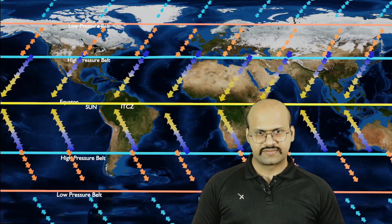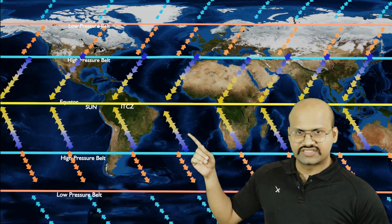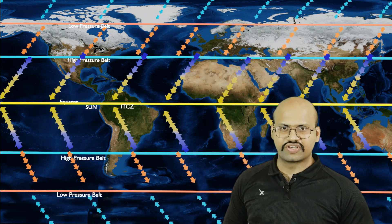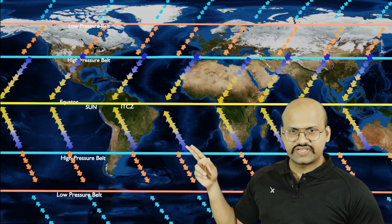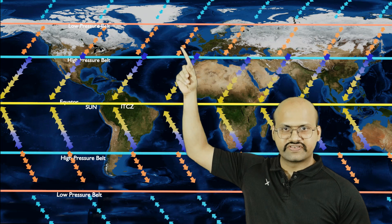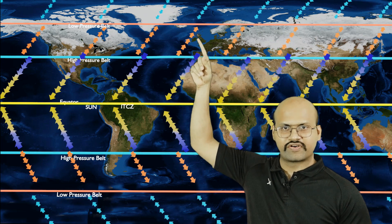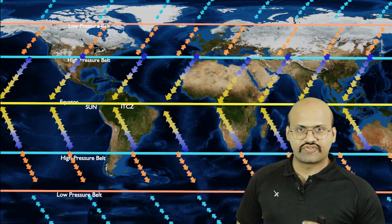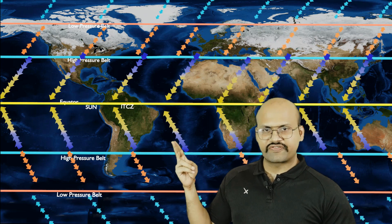Let's start with surface winds. Here we can see the flow of surface winds — this is the Hadley cell, this is the Ferrel cell, and this is the polar cell. These winds flowing from the eastern direction are called easterlies, winds flowing from the western direction are called westerlies, and the polar winds are also called easterlies because they flow in the eastern direction.